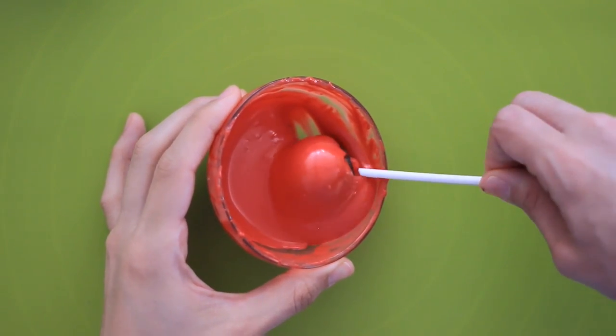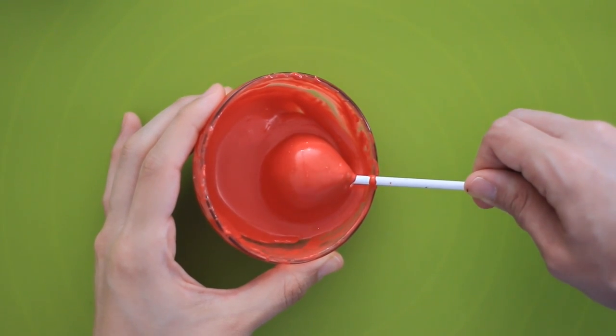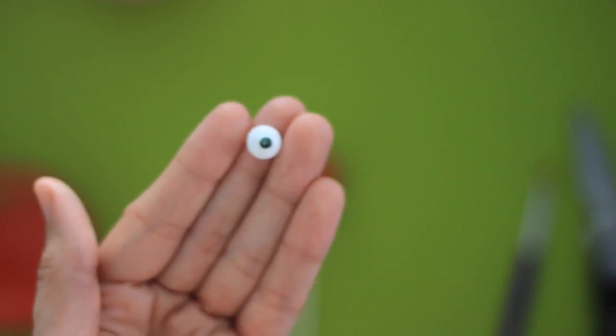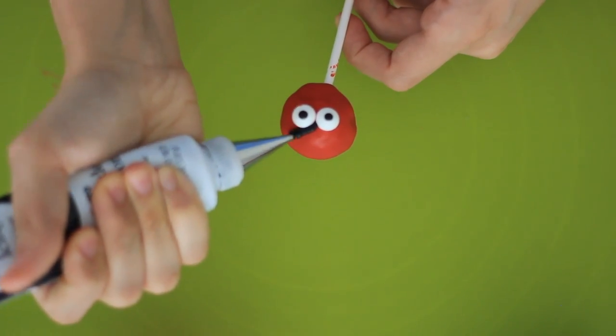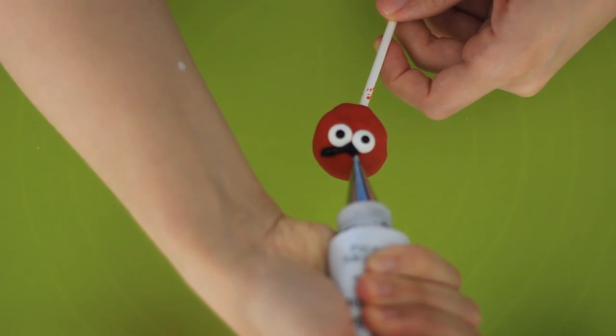After the cake pop has been refrigerated, take your cake pop and dip it inside the candy melt. While the candy melt is still wet, place your candy eyeballs. Create the angry brows by using a number two tip and black decorating icing.